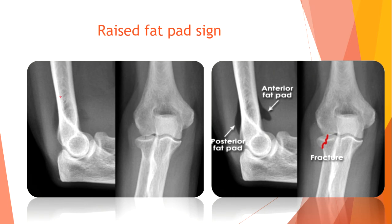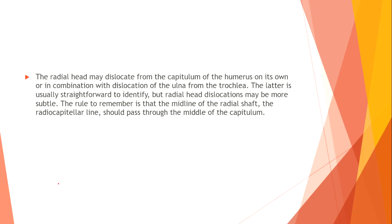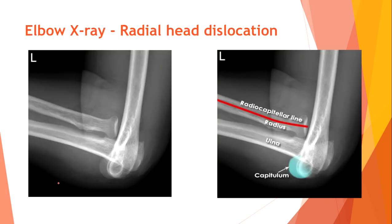Here we can see a raised anterior fat pad and a posterior fat pad. The radial head may dislocate from the capitulum of the humerus on its own, or in combination with dislocation of the ulna from the trochlea. Radial head dislocations may be subtle. The rule to remember is that the radiocapitellar line — through the center of the radial shaft — should pass through the midline of the capitulum. Here is an elbow x-ray showing radial head dislocation.